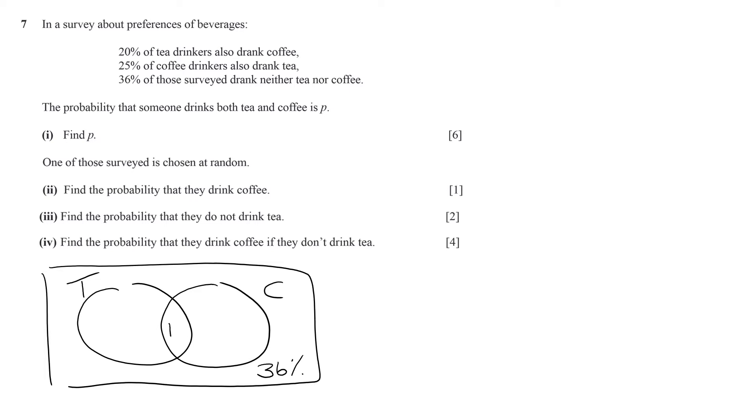The probability that someone drinks tea and coffee is p. So 20 percent of the probability of tea has to equal the probability of tea and coffee. 20% of tea drinkers also drank coffee, so 0.2 times the probability of tea equals p, which means the probability of tea is 5p. Now if we have p already in the tea circle, then we must have 4p in the rest.